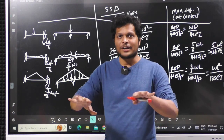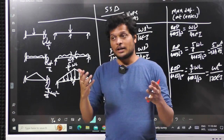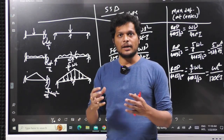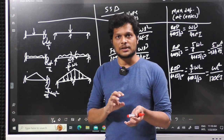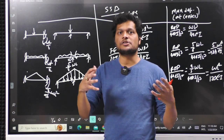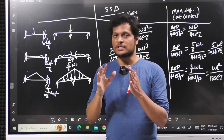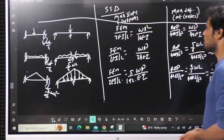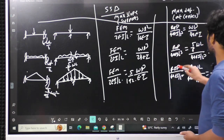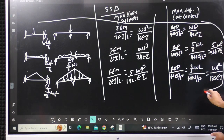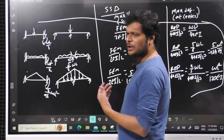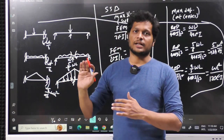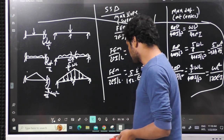Load distribution is not equal among all supports — it depends on boundary conditions, whether the support takes moment or not. Depending on boundary conditions and deflection, reactions distribute accordingly while satisfying equilibrium equations. This is how we can remember slopes and deflections. A standard table will be provided in the free PDF section.